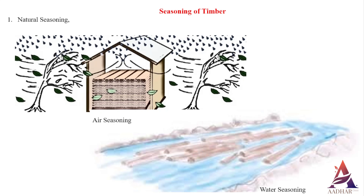Air seasoning. Logs of timber are stacked one on top of the other in a shed as part of the process of air seasoning. Keeping a distance between the structure and the ground is required, so a platform is constructed at a height of 300 mm from the ground. The arrangement of the logs allows for unrestricted circulation of air throughout the space between each log. Seasoning is the process by which the moisture content of timber is gradually reduced as a result of the passage of air. Even though it is a laborious process, the end result will be timber that has been well seasoned.